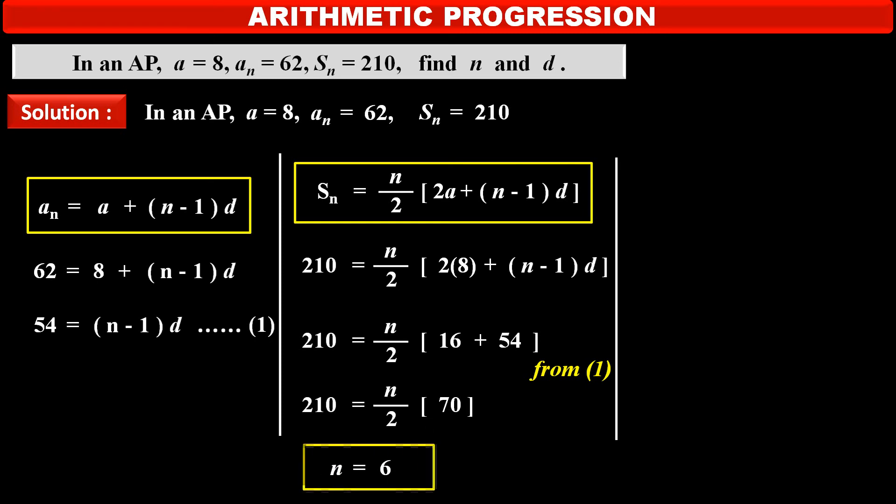Substituting this value of n as 6 in equation number 1, which is 54 is equal to n minus 1 into d. So, we get 54 is equal to, in bracket, value of n that is 6 minus 1 into common difference d, which we have to find out.